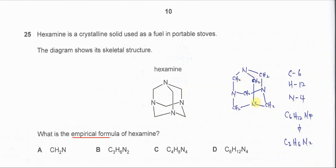After we identify the structure with the correct numbers of carbon, nitrogen, and hydrogen, we can get the answer. Let's count the carbons: this structure has one, two, three, four, five, six — so carbon is six.